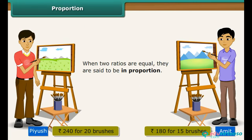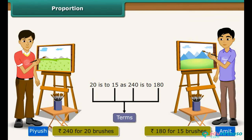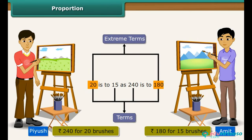When two ratios are equal, they are said to be in proportion. Ratios in proportion are represented as 20 is to 15 proportion 240 is to 180, and read as '20 is to 15 as 240 is to 180.' Each number in a proportion is called a term. The first and last terms are called the extreme terms; the second and third terms are called the middle terms.